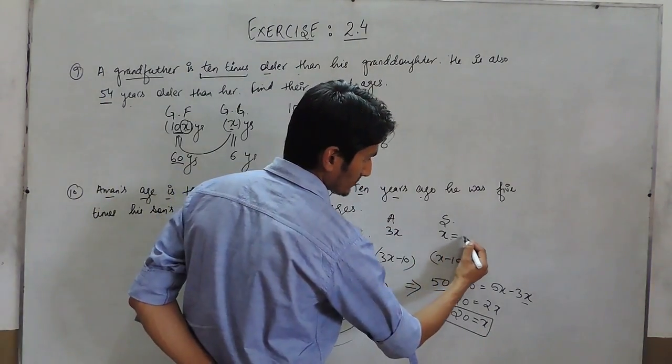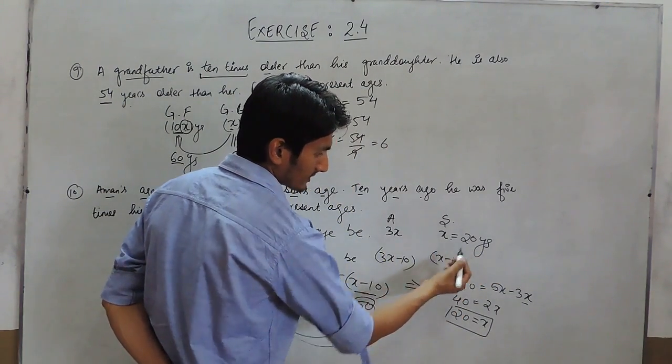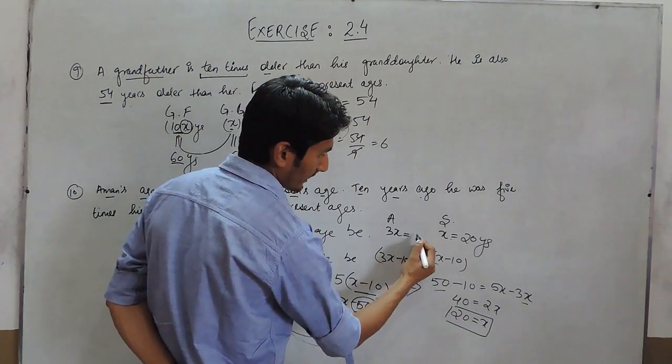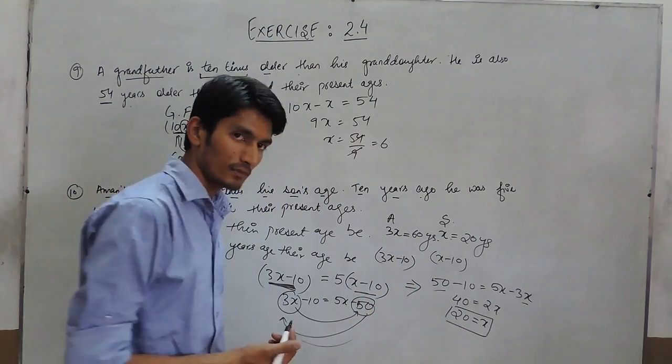So, the son's age must be 20 years because x is equal to 20 and father's age must be 60 years. Thank you.